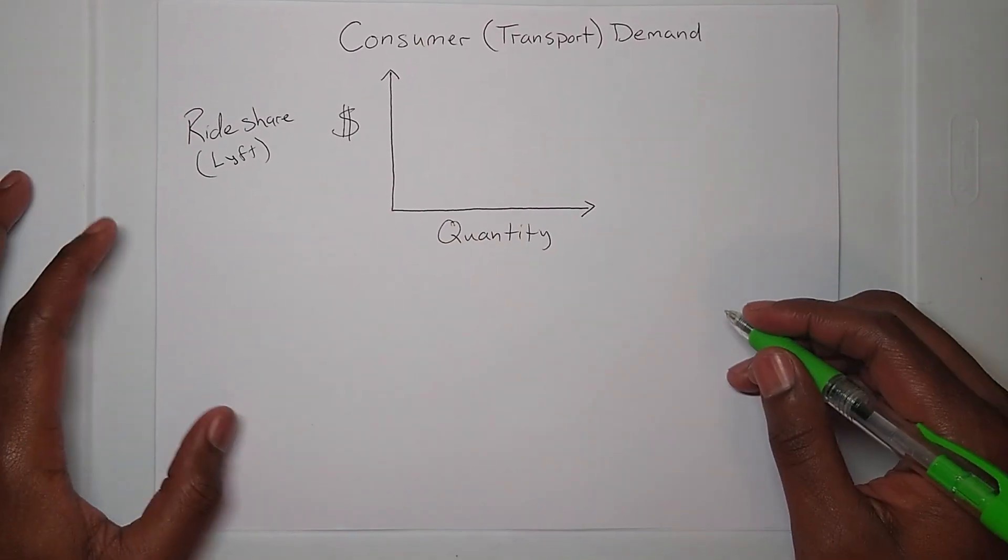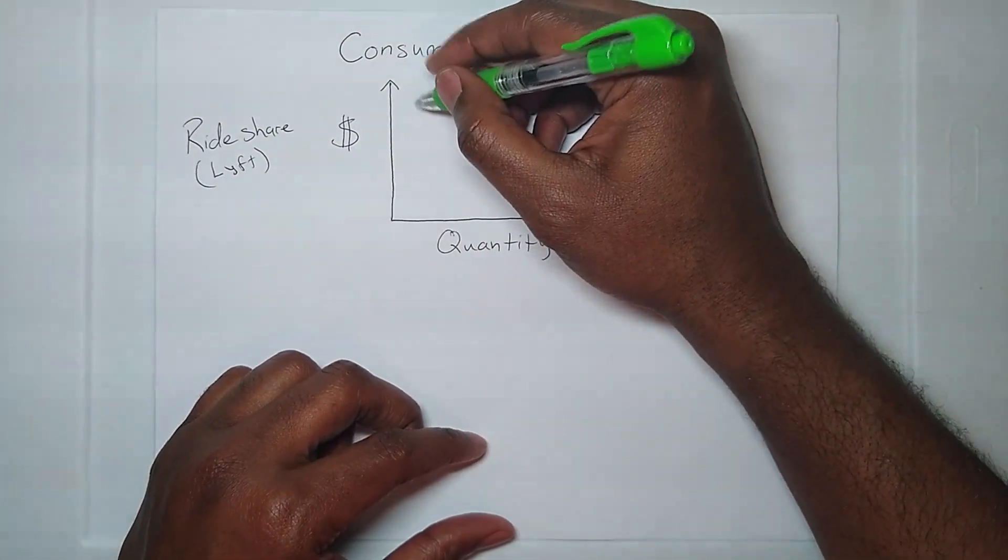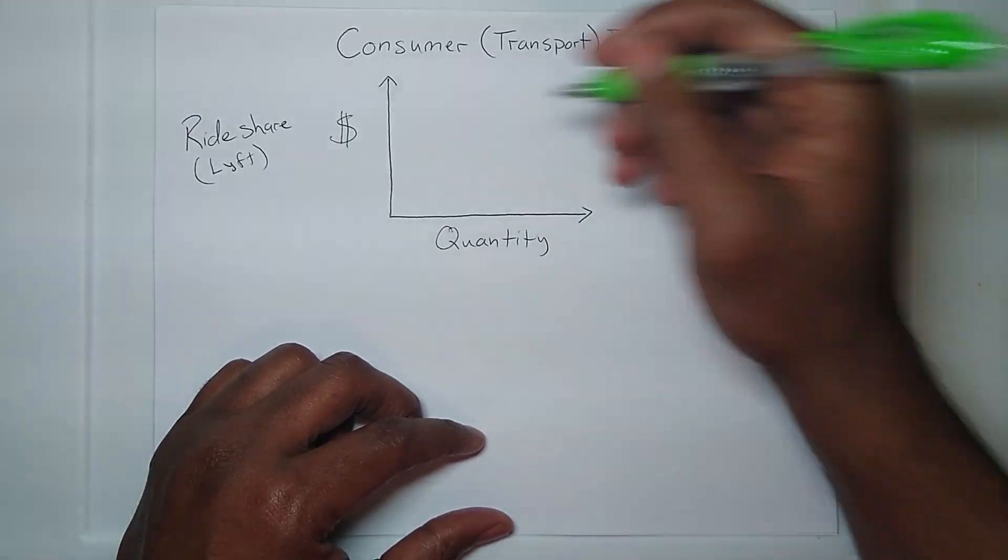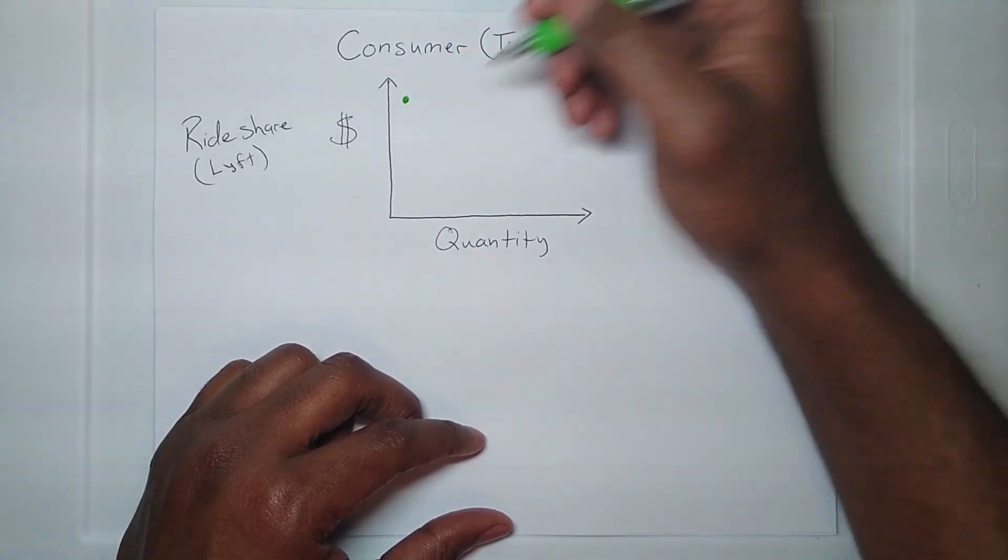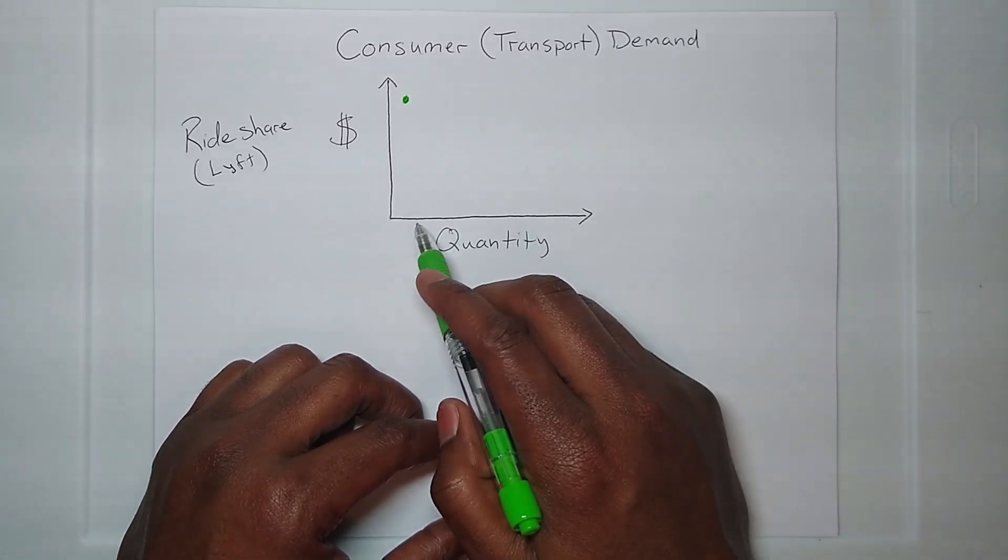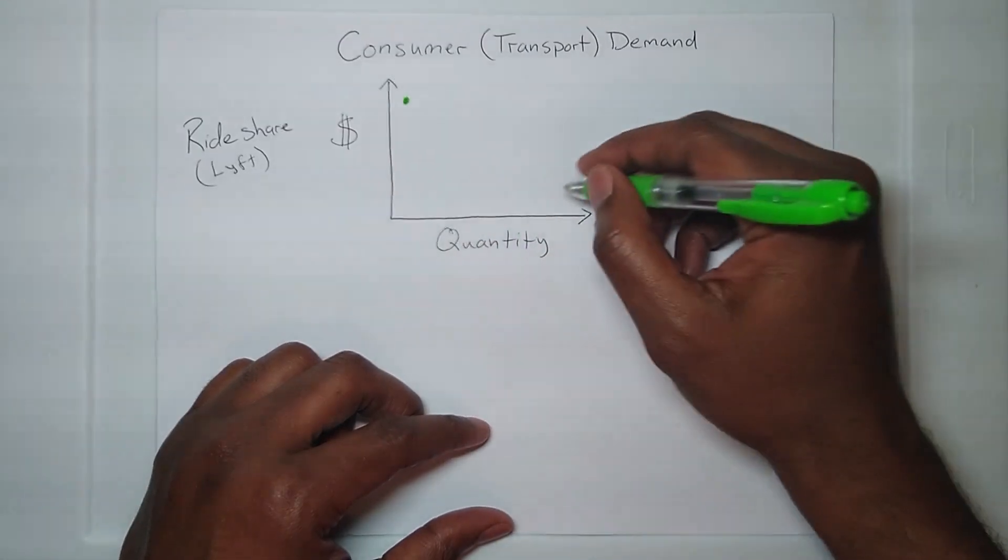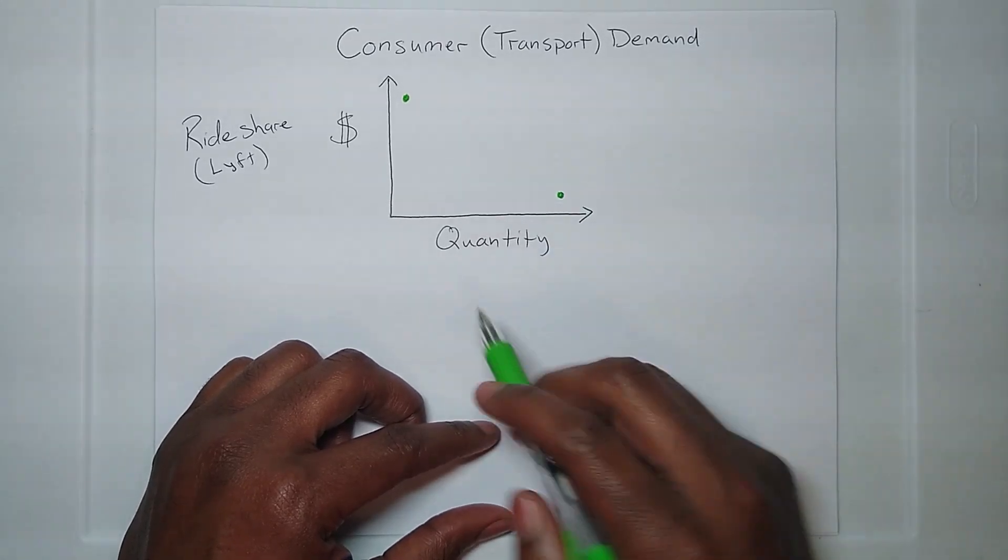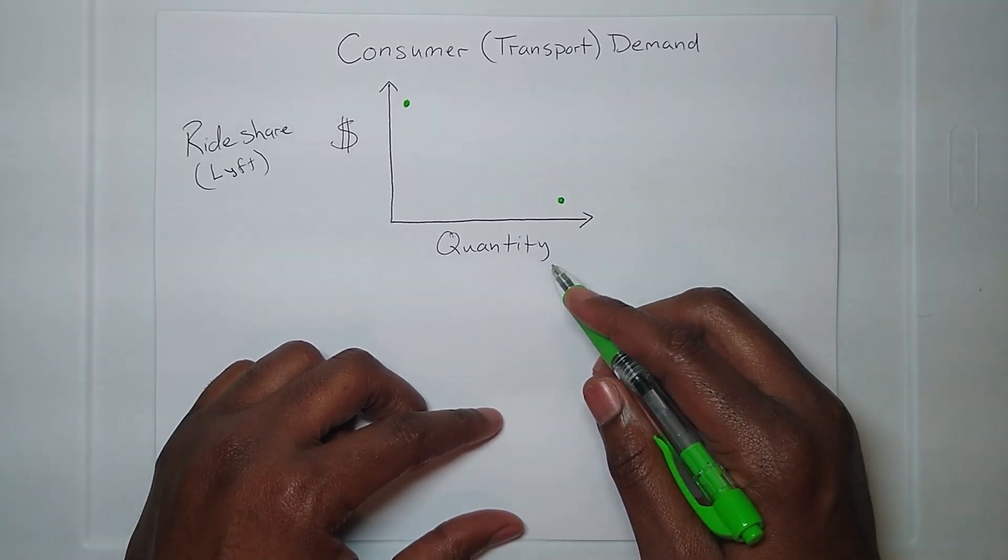Let's consider a rideshare company. Let's say the cost to access this rideshare company, right here I got Lyft, it can be anyone. If it was really high to get a ride with that rideshare company, then the demand would be very low. But if it was really cheap to use that rideshare company, then the demand for the quantity of rideshares would be very high.